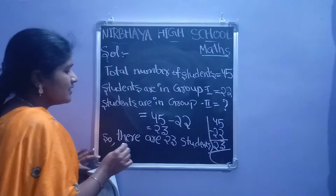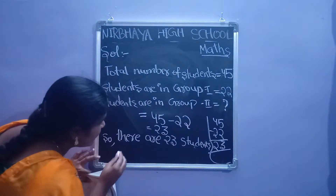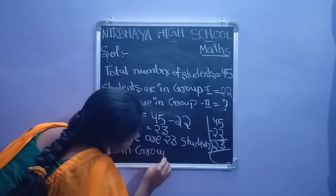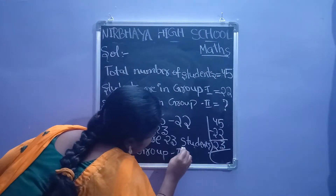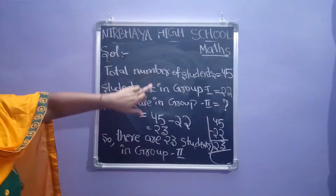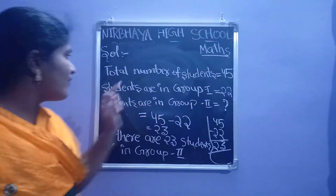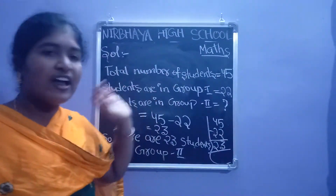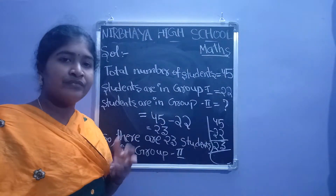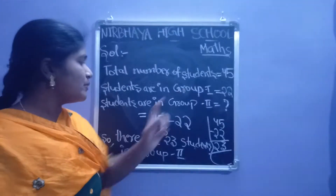So, there are 23 students in group 2. See children: total number of students are 45. In group 1, 22 students are there. In group 2 we don't know, so we have to find the answer: 45 minus 22.